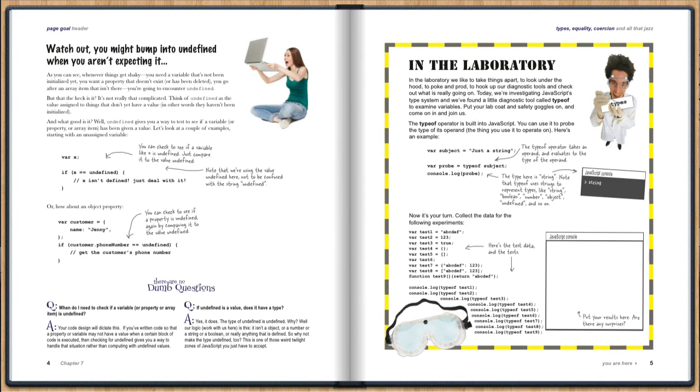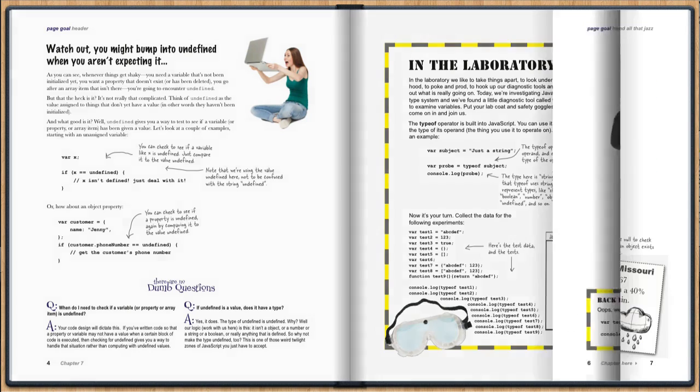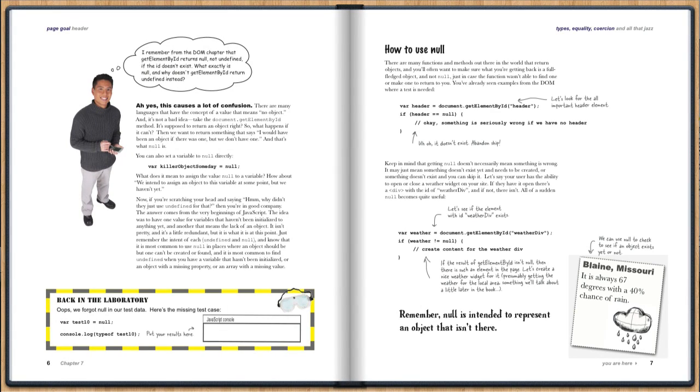Now, we're going to start the chapter talking about two interesting values, which we've mentioned before. There's undefined and there is null. We're going to walk through those, talk about where you might see those and what you might do when you see those.